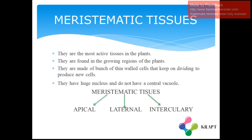Meristematic tissues are the most active tissues in plants. They are found in the growing regions of the plants and are made up of thin-walled cells that keep on dividing to produce new cells. They have a huge nucleus. A central vacuole is not present in meristematic tissue because there is no need for storage. Meristematic tissues are divided into three parts: apical, lateral, and intercalary.